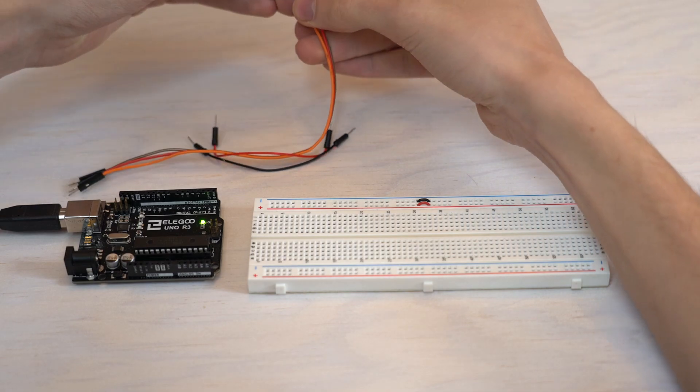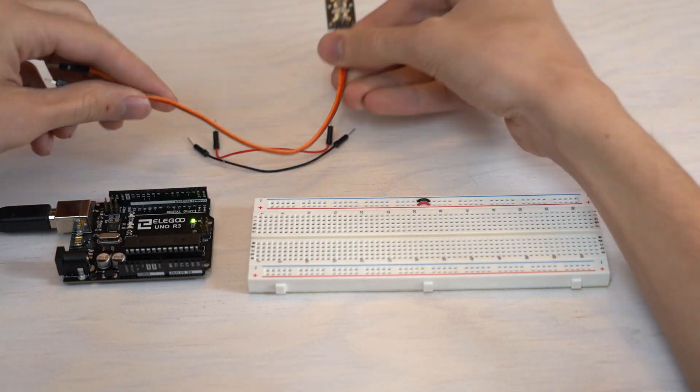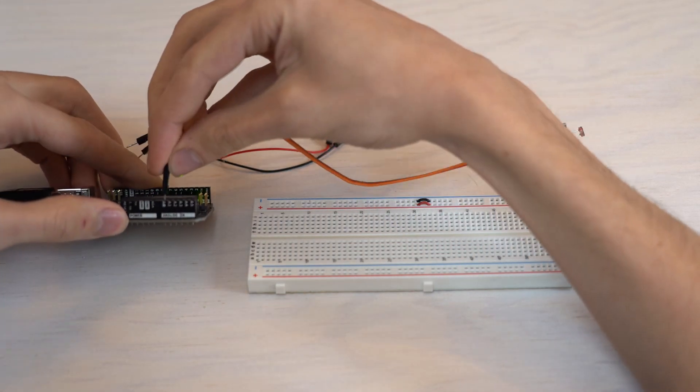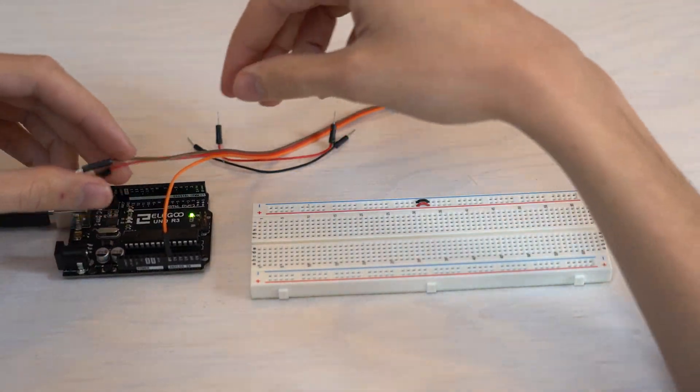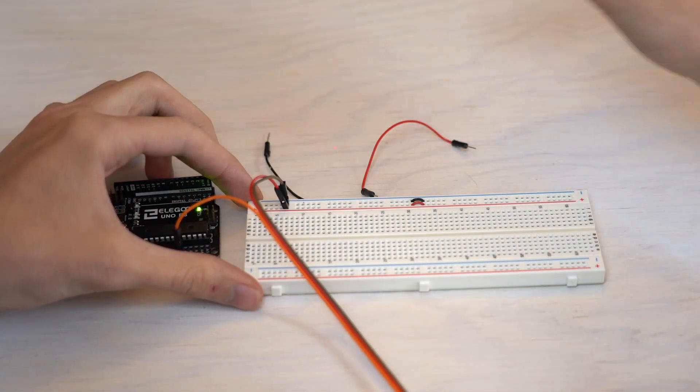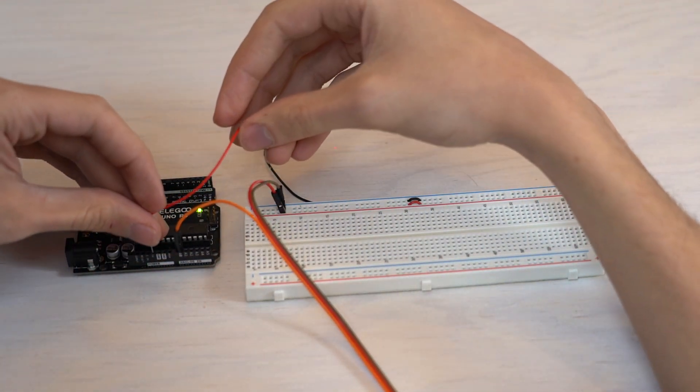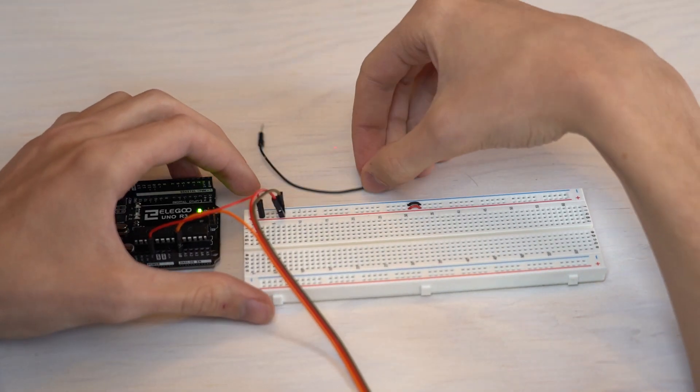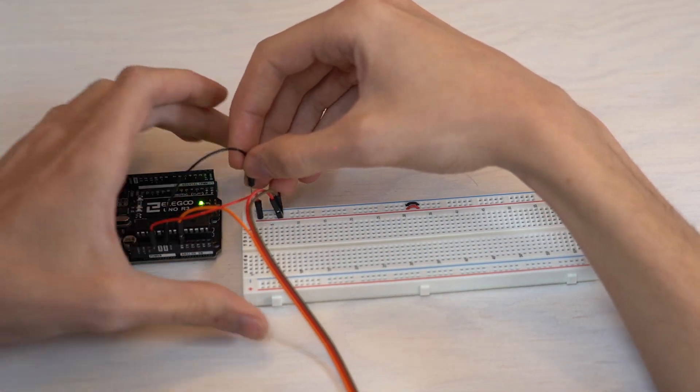Connect the signal wire to an analog pin, here pin A0. The red wire goes to the positive pole and the green one to the negative. Link the positive pole to the 5V pin and the negative pole to the ground pin.